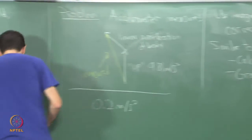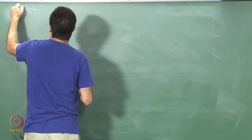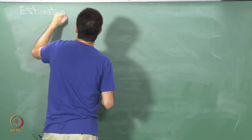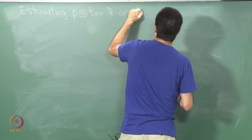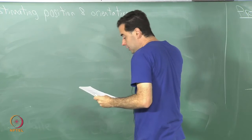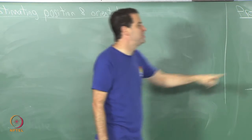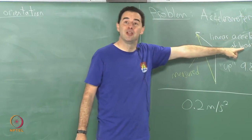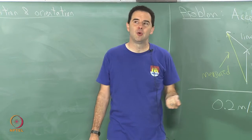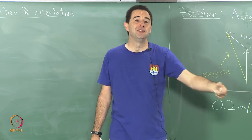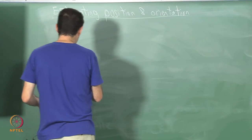That leads us to estimating position and orientation — the full six degrees of freedom. This linear acceleration information may very well be useful and we can use it in a system to perform position and orientation tracking. However, we also want to have an extra signal that provides positional drift correction.